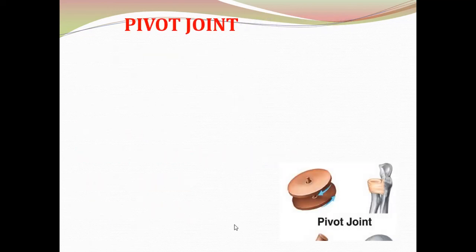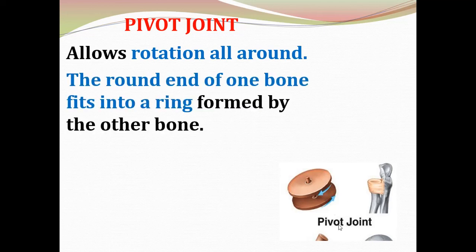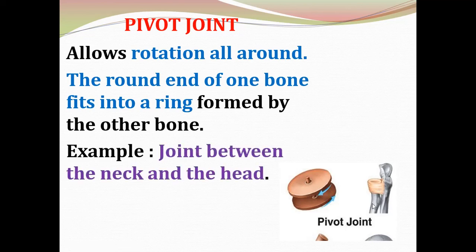The first is the pivot joint. Here you can see the picture of a pivot joint. It allows rotation all around. The round end of one bone fits into a ring formed by the other bone, allowing rotation in all directions. An example is the joint between the neck and the head.